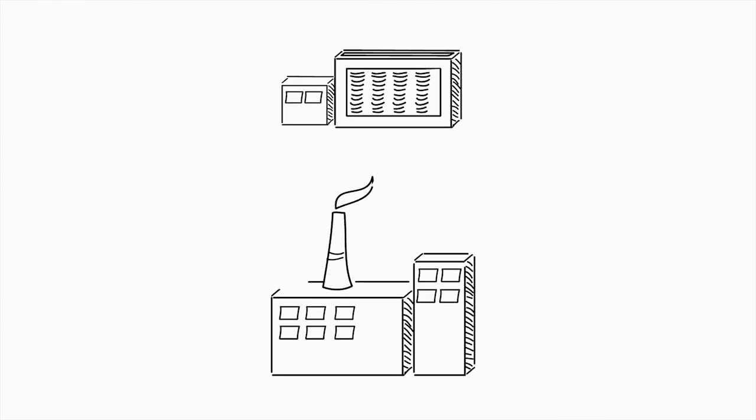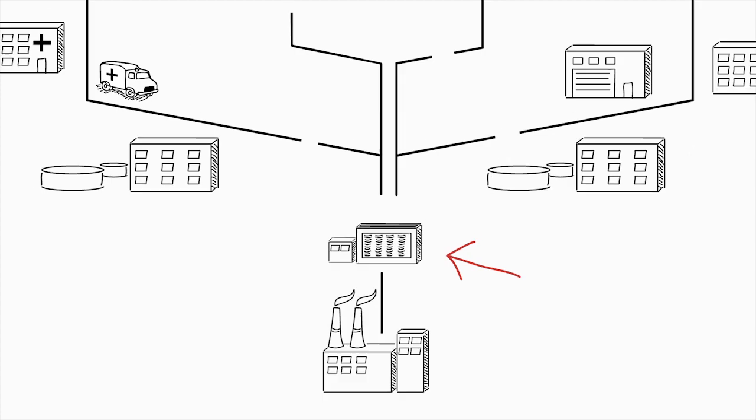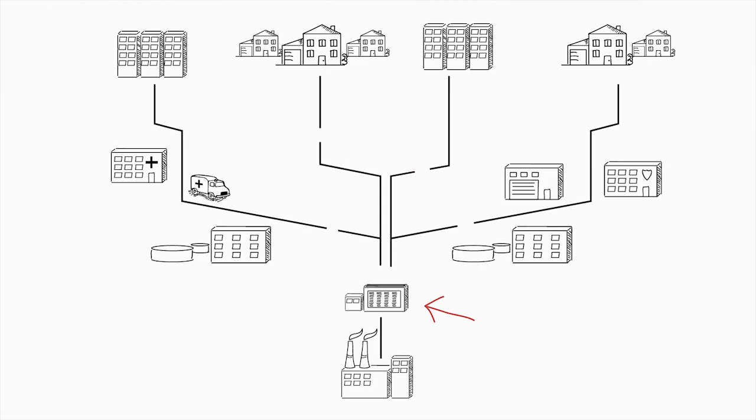First, we work to repair high voltage transmission lines that feed power into our network over large geographic areas. Then, we focus on essential services in our communities like hospitals, police, ambulance, fire brigade, water treatment facilities and pumping stations.